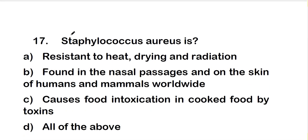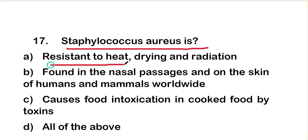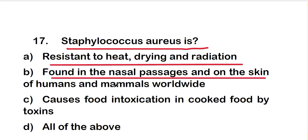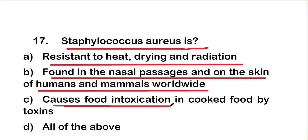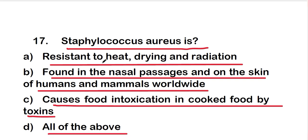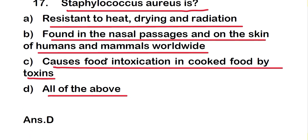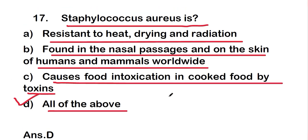Question 17: Staphylococcus aureus — which of the following holds true? Options are: it is resistant to heat, drying, and radiation; it is found in nasal passages and on the skin of humans and mammals worldwide; it causes food intoxication in cooked food by toxins; or all of the above. The right answer is option D — all of the above.